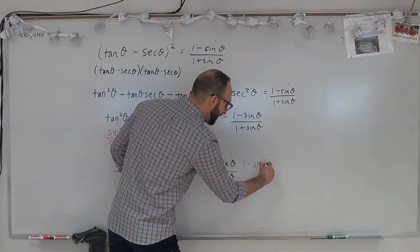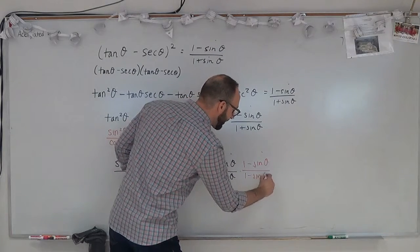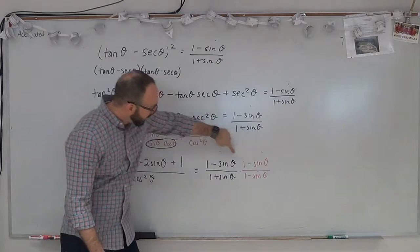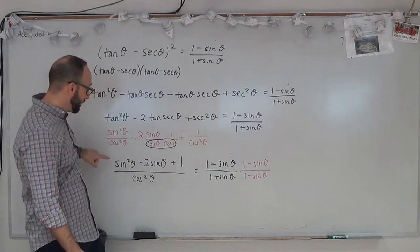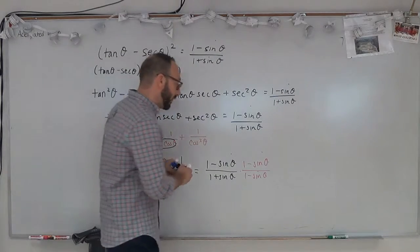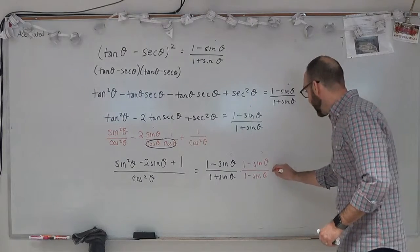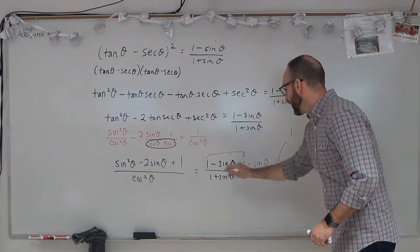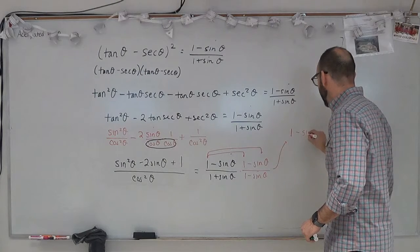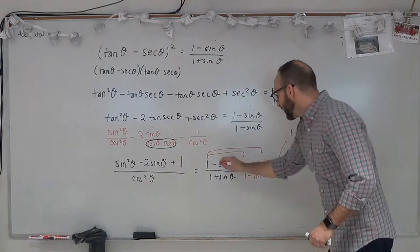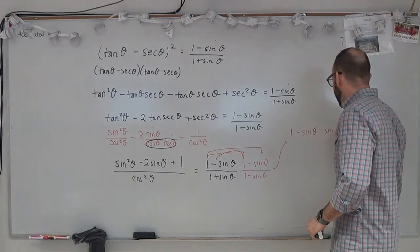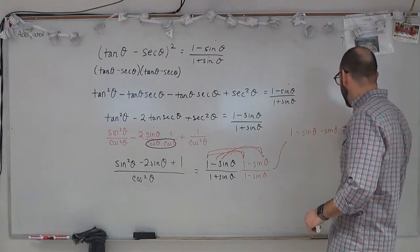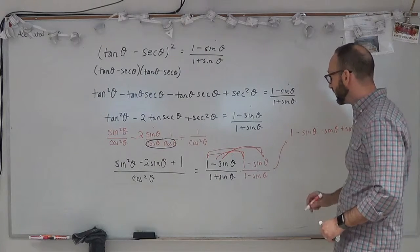I'm going to multiply by 1 minus sine theta over 1 minus sine theta. One reason I chose this is that when I multiply it out, it's going to follow the perfect square trinomial pattern, which the left side does as well. So: 1 times 1 is 1, 1 times negative sine theta is minus sine theta, negative sine theta times 1 is negative sine theta, and negative sine theta times negative sine theta is positive sine squared theta.